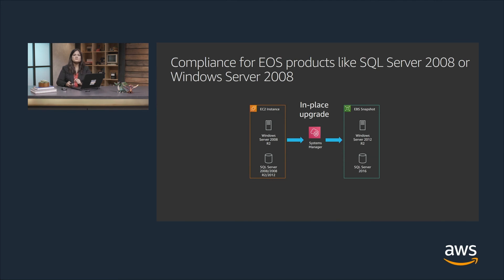Let's discuss end-of-support compliance. If your Microsoft workloads are approaching end of support — like SQL Server 2008 or Windows Server 2008 — you can use the in-place upgrade tool provided by AWS to upgrade to supported versions. This capability lets you easily upgrade using a Systems Manager script. It is fully automated and non-disruptive. With side-by-side deployments on existing and new versions, you can validate your application without disturbing your production environment.